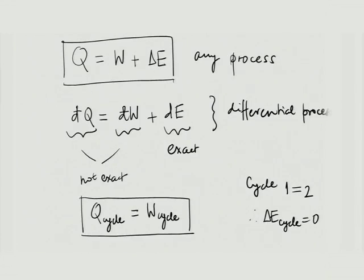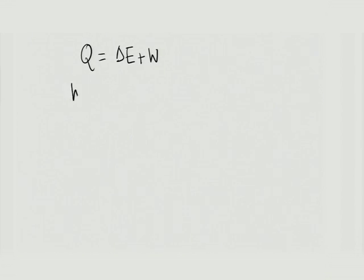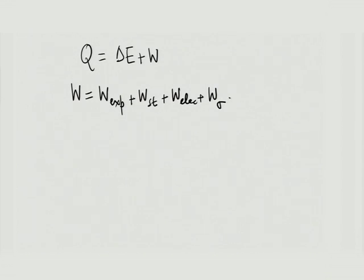The next step: delta E has different components, and W has different components. We will split the first law Q equals delta E plus W into those components. W can be made up of various modes: expansion, stirrer, electrical, surface tension, and so on. The more complex the system, the more work modes are possible. Some modes are two-way, some are one-way — a distinction we will return to when discussing the state postulate.